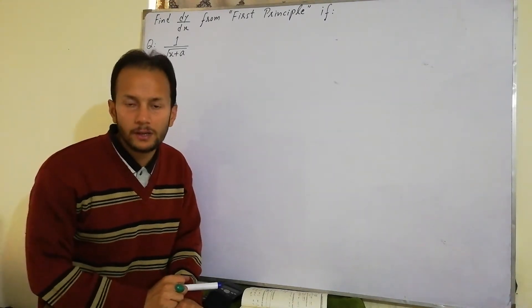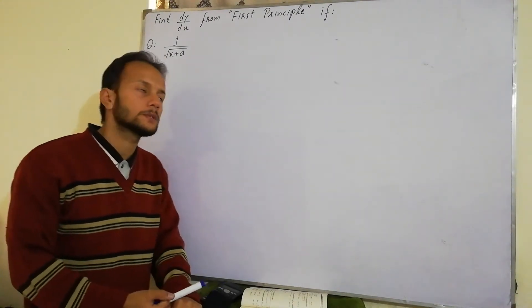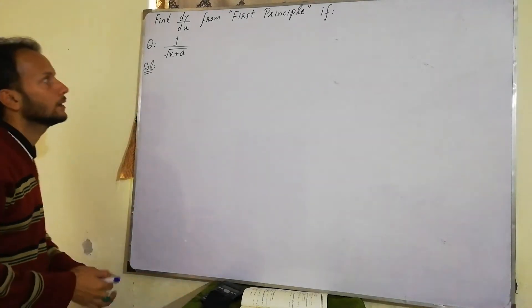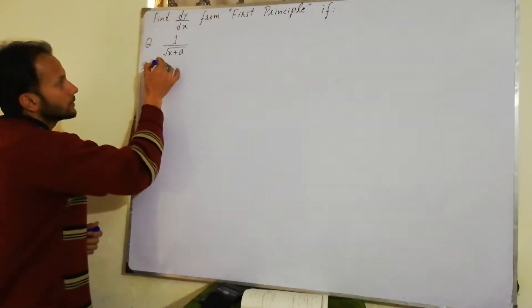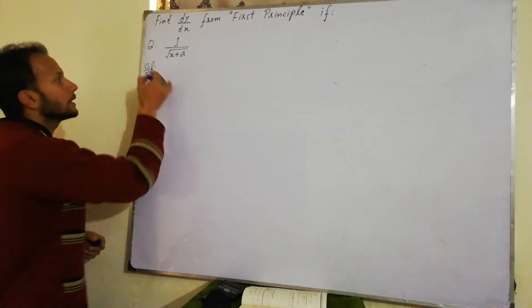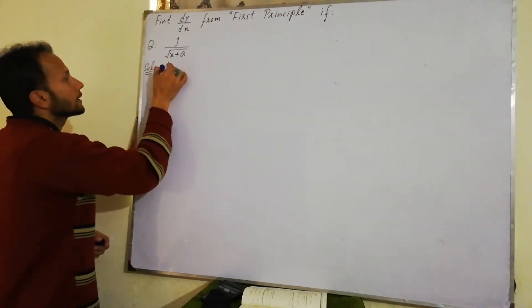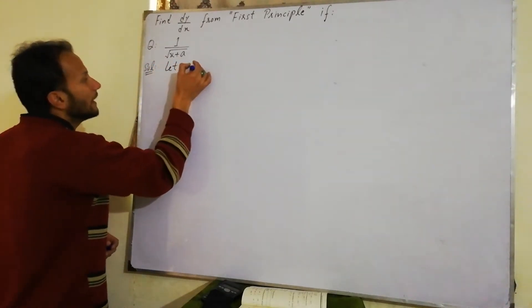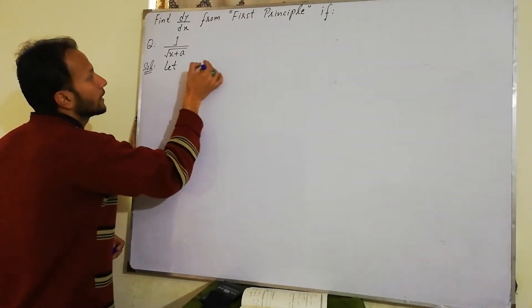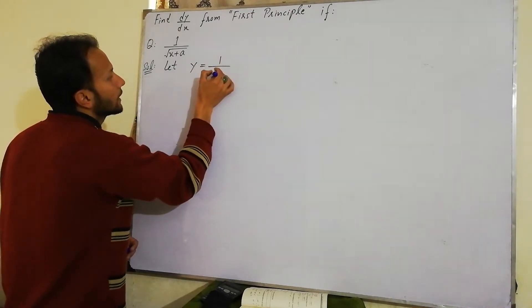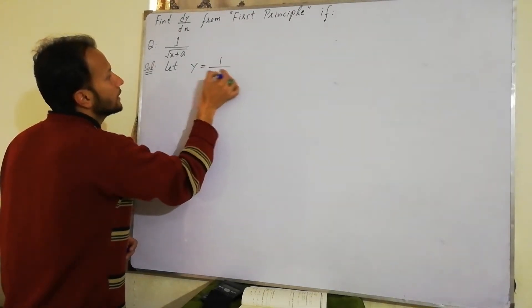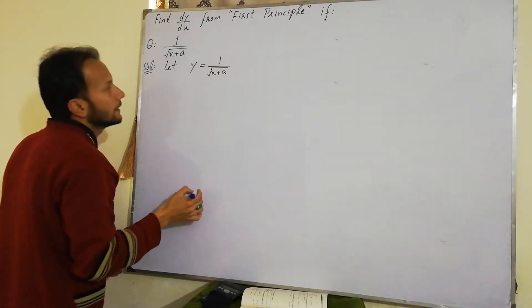In sabmein 4 steps se kaam karna hai. Jo bhi expression question mein ho, shuru mein aap pehle let karein y equal to 1 divided by square root of (x + a).